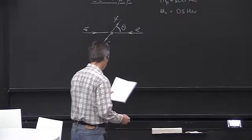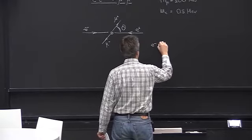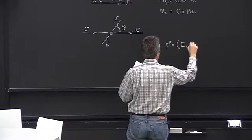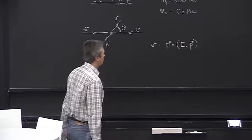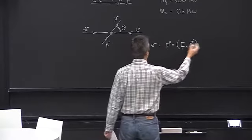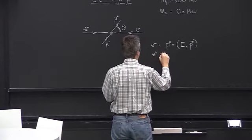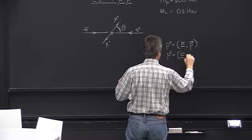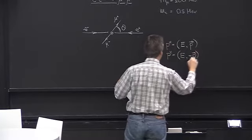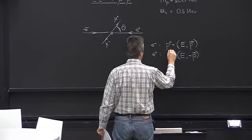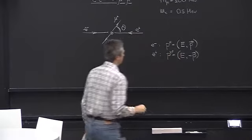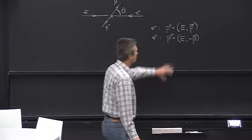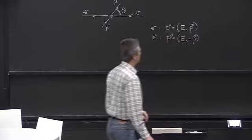Let's first discuss kinematics a little bit. For electrons, their four-momenta are defined by their energy and their momentum, with the magnitude related to energy by the usual relativistic dispersion relation. In the center of mass frame, the three-momenta of the electrons are opposite and equal in magnitude.